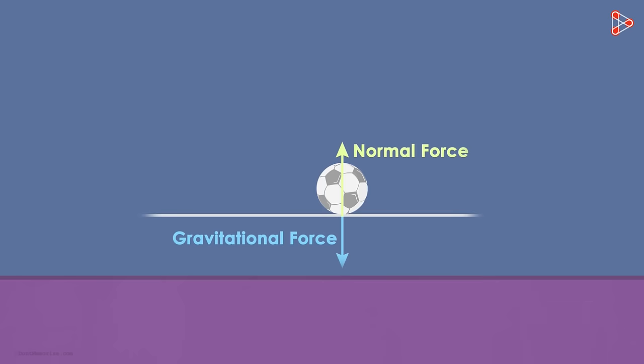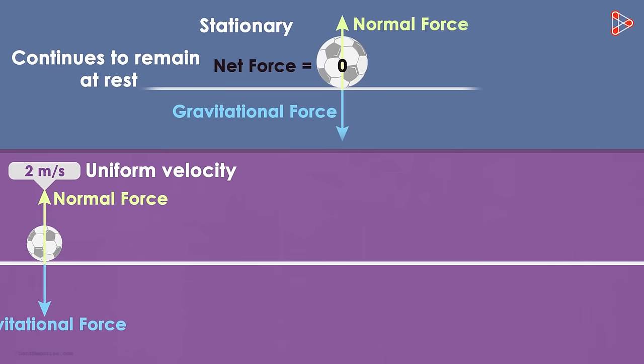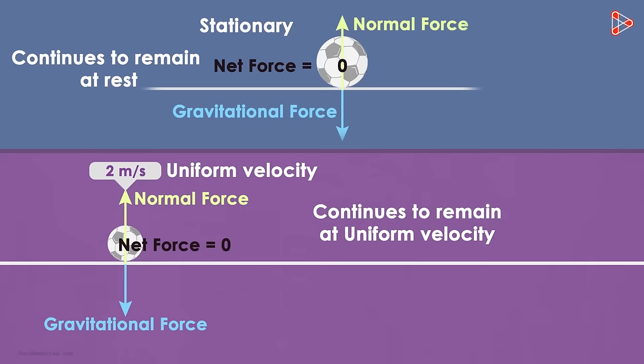An object will continue to move at uniform velocity even if the net force on it is zero. So there are two things we've learnt here. First, if the object is stationary and the net force acting on it is zero, then it will continue to remain at rest. Second, if the object is moving at uniform velocity and the net force acting on it is zero, then it will continue to move at that same uniform velocity.